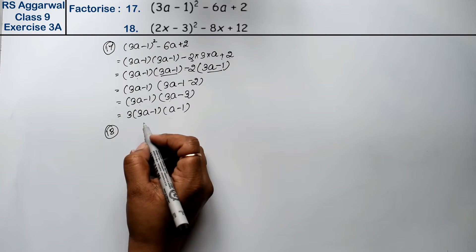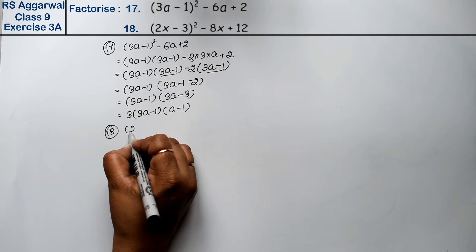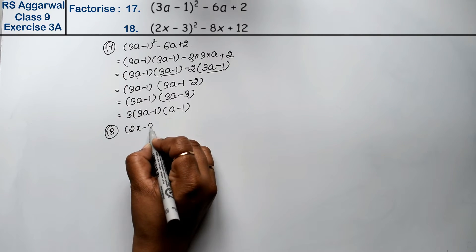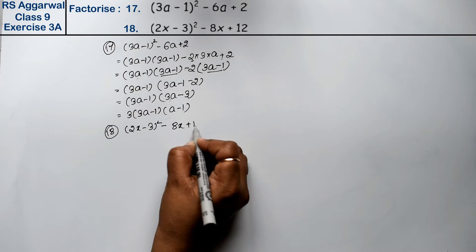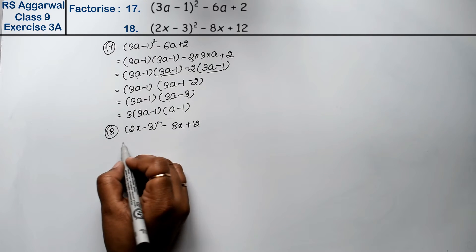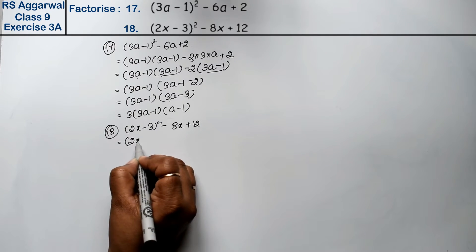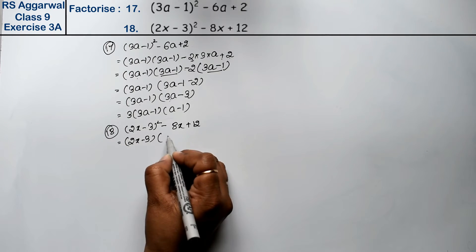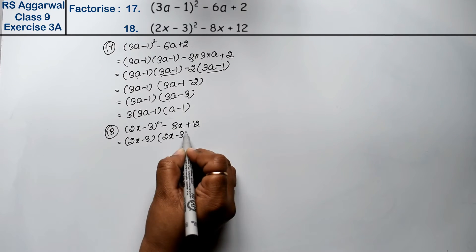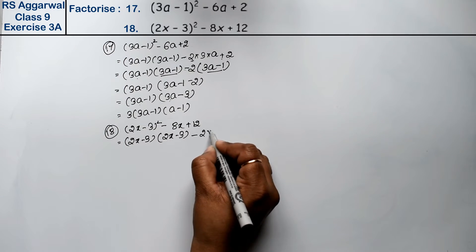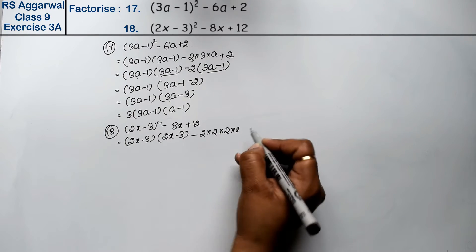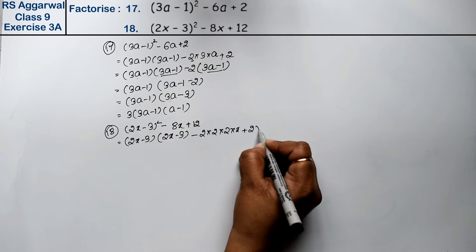Let's do question number 18. Question number 18 is (2x - 3) whole square minus 8x plus 12. Now let's see, (2x - 3) squared means (2x - 3) into (2x - 3). We can write -8x as 2 × 2 × 2 × x, and 12 we can write as 2 times...